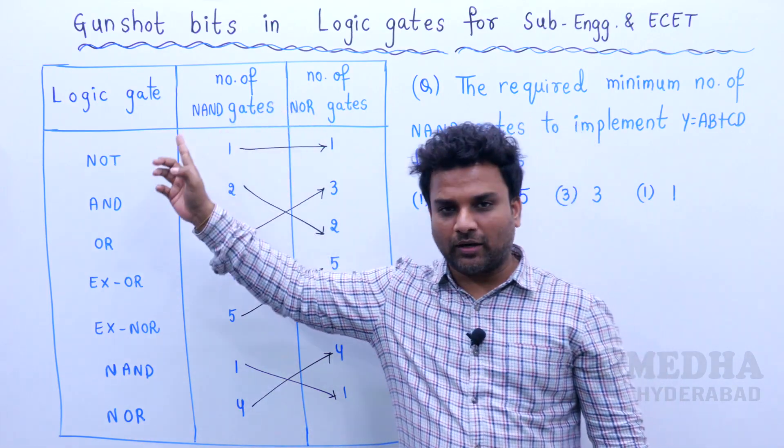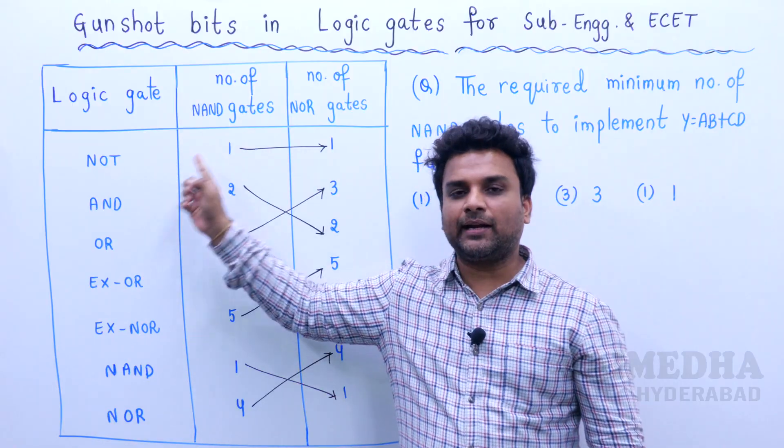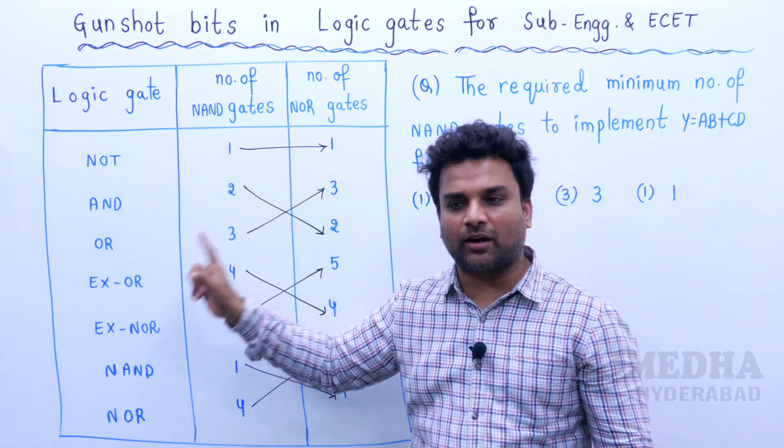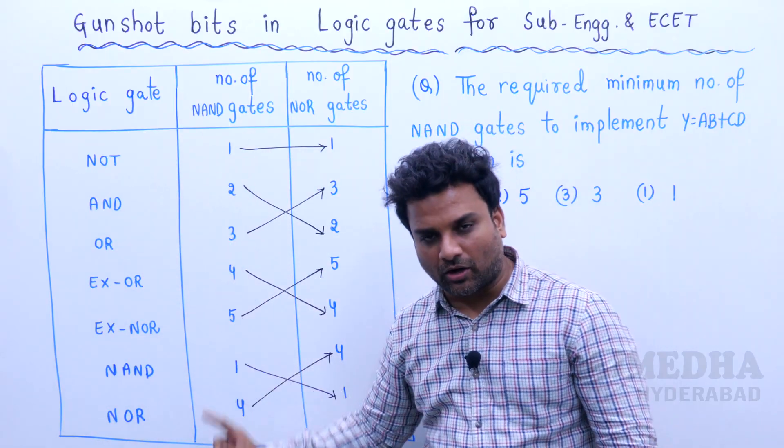Your shortcut sequence is: NOT, AND, OR, XOR, XNOR, NAND, NOR — that is 1, 2, 3, 4, 5, 1, 4.